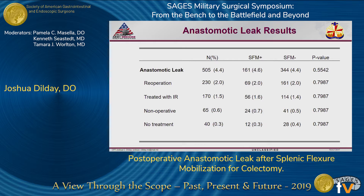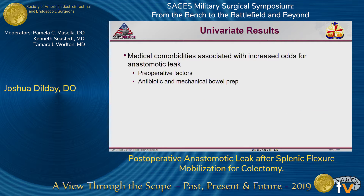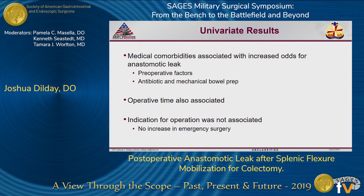No difference was seen in the management of anastomotic leak, whether treated with re-operation, interventional radiology, operative management, or no operation at all. Univariate analysis identified that preoperative factors were associated with leak, as were antibiotic and mechanical bowel prep as identified in the colorectal set. Operative time was associated, though marginally. The indication for operation or emergency status was not seen to be associated with an increased odds of anastomotic leak.